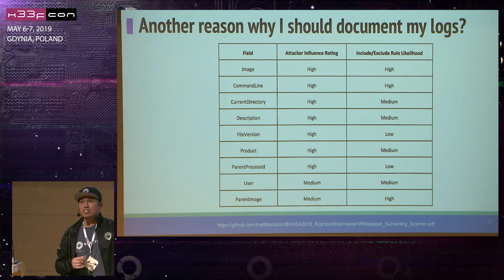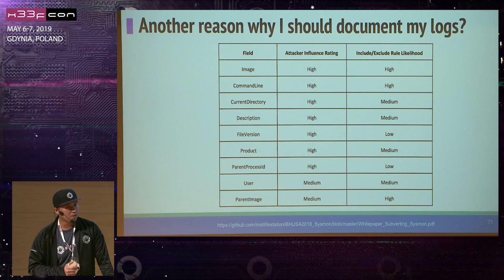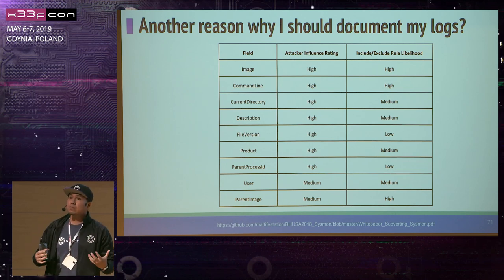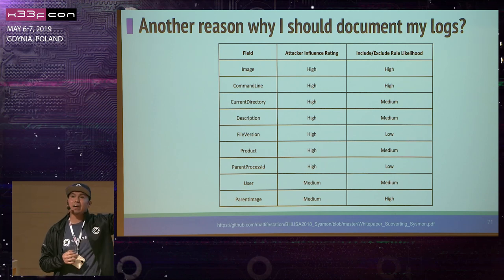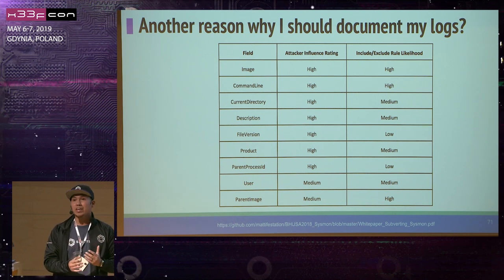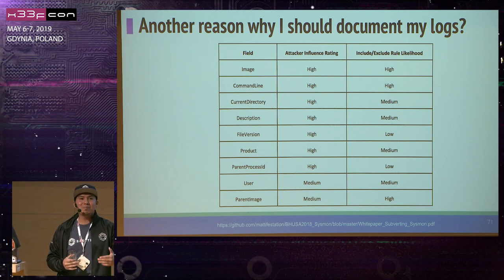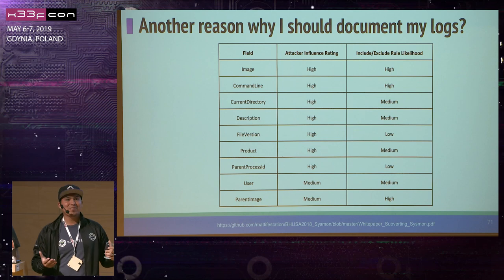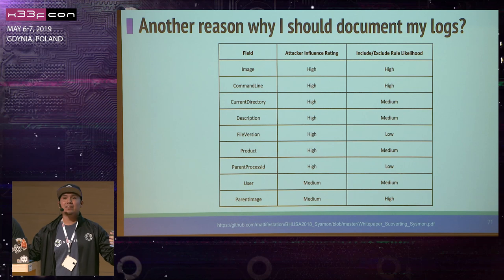Another reason to do this is from the red team perspective. My colleagues Matt Graver and Lee Christensen talked in their Black Hat presentation last year about documenting Sysmon — specifically which fields have a higher attack influence rating and which fields can be manipulated. They had to do data dictionaries to understand that. So if a red teamer is doing it, why isn't a blue teamer doing it as well? In general, we all need to be doing data dictionaries for the data we collect and generate.